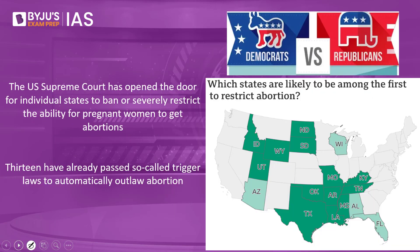There are two major political parties in the US: Democrats and Republicans. The Democrats believe in pro-choice — that women have the right to decide whether to abort. The Republicans are conservatives who believe in a pro-life stance. As a result of this judgment, Democrat-controlled states may enact pro-choice laws, while Republican states may enact pro-life laws. The US Supreme Court has opened the door for individual states to ban or severely restrict the ability for pregnant women to get abortions.